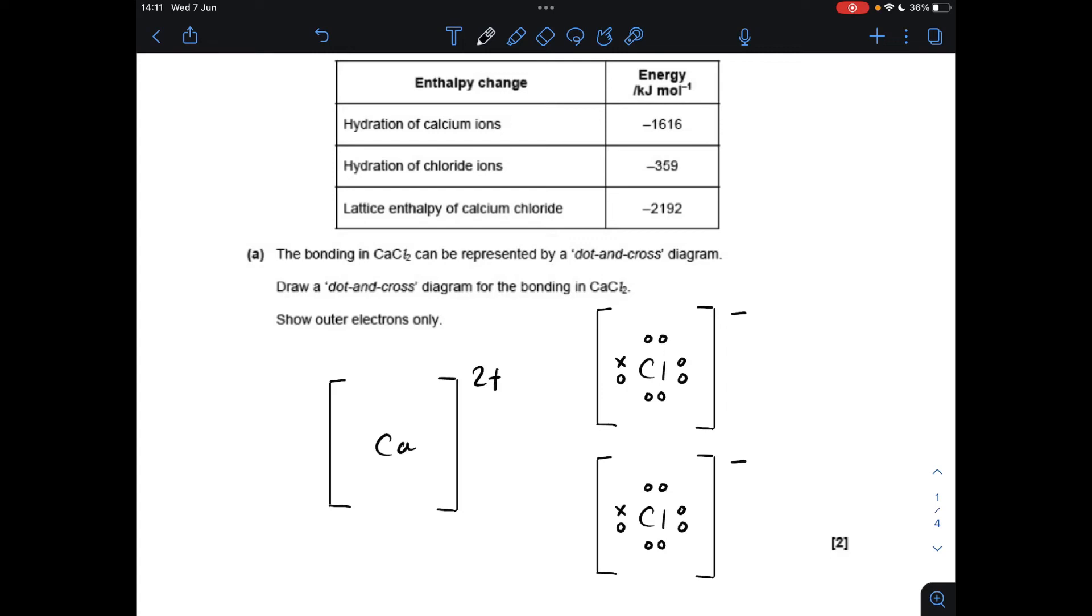Okay, so make a start. You can see I've already put in the dot and cross diagram for calcium chloride. Just quickly talk about the calcium two plus ion - you notice I haven't put any electrons in this outer shell. You could put eight in, but because I've used crosses here for the chloride ions, the electrons from the calcium, then I would have to use crosses there.